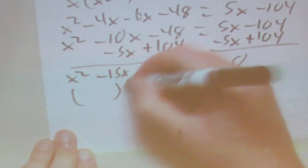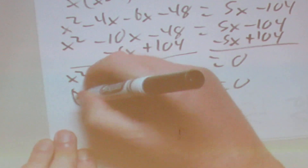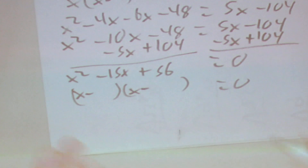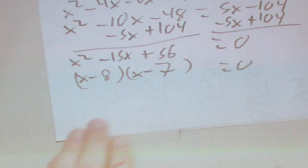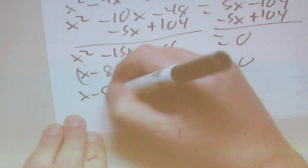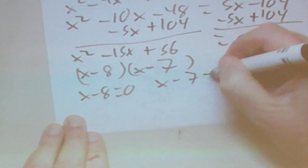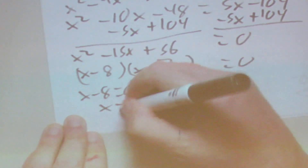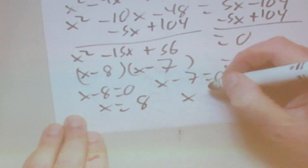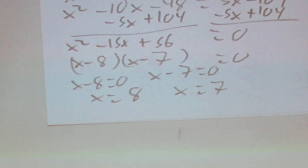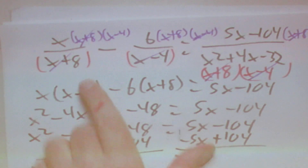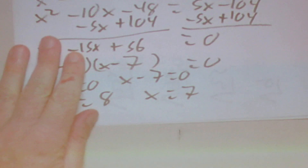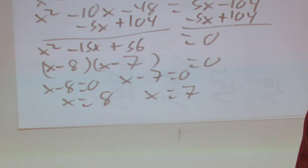Now we factor x squared minus 15x plus 56. Two factors of 56 that add up to 15 are 8 and 7, giving us x minus 8 times x minus 7 equals 0. Setting each factor to 0: x minus 8 equals 0 gives x equals 8, and x minus 7 equals 0 gives x equals 7. Neither value makes the original denominators zero, so both x equals 8 and x equals 7 are valid answers.